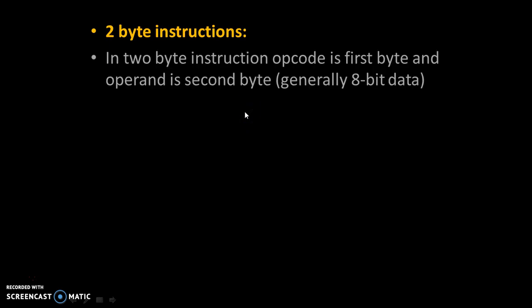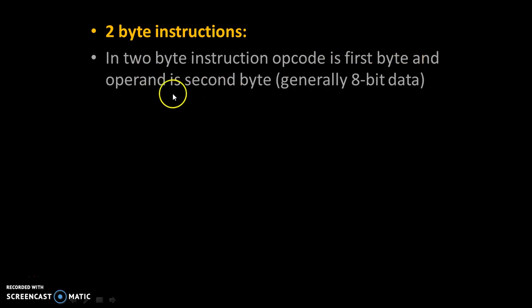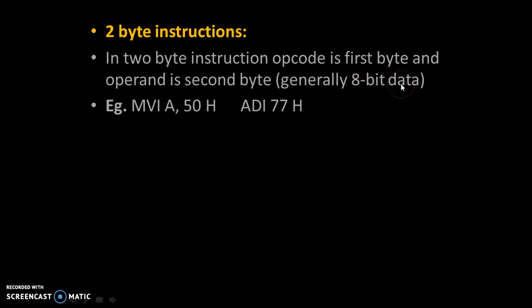2-byte instructions: In a 2-byte instruction, the opcode is the 1st byte and the operand is the 2nd byte. Generally this operand is 8-bit data.